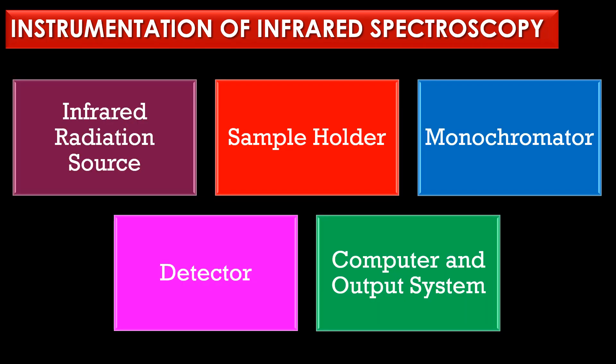The instrumentation of infrared spectroscopy contains five major parts: infrared radiation source, sample holder, monochromator, detector, and computer and output system.